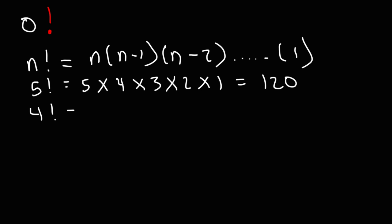If we wish to calculate 4 factorial, we start from 4 and multiply all the whole numbers down to 1. So 4 times 3, which is 12, times 2 is 24.